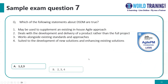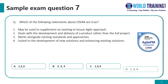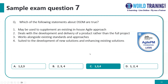Question number seven: which of the following statements about DSDM are true? The correct answer is C — statements one, three, and four are true. The second statement, which deals with the development and delivery of a product rather than the full project, is false. DSDM does deal with the delivery of the full project.